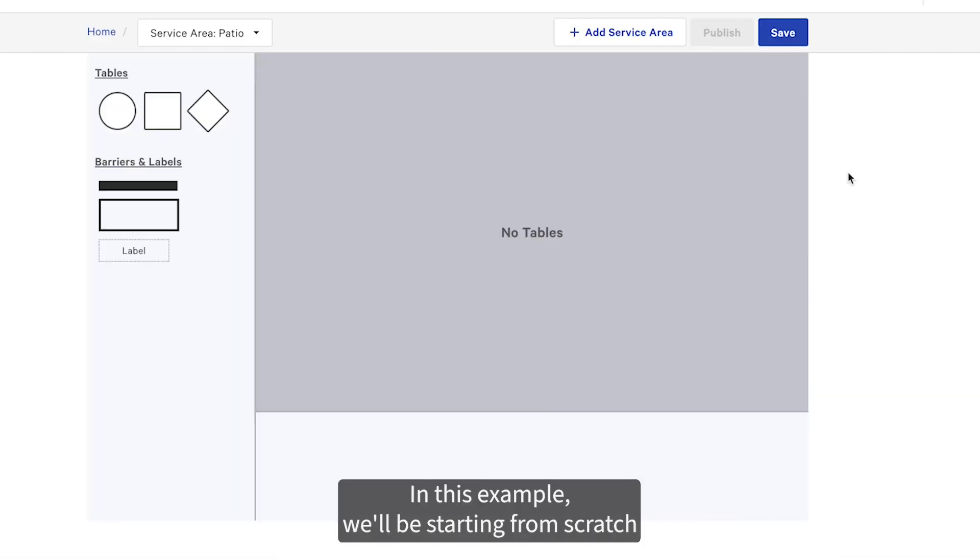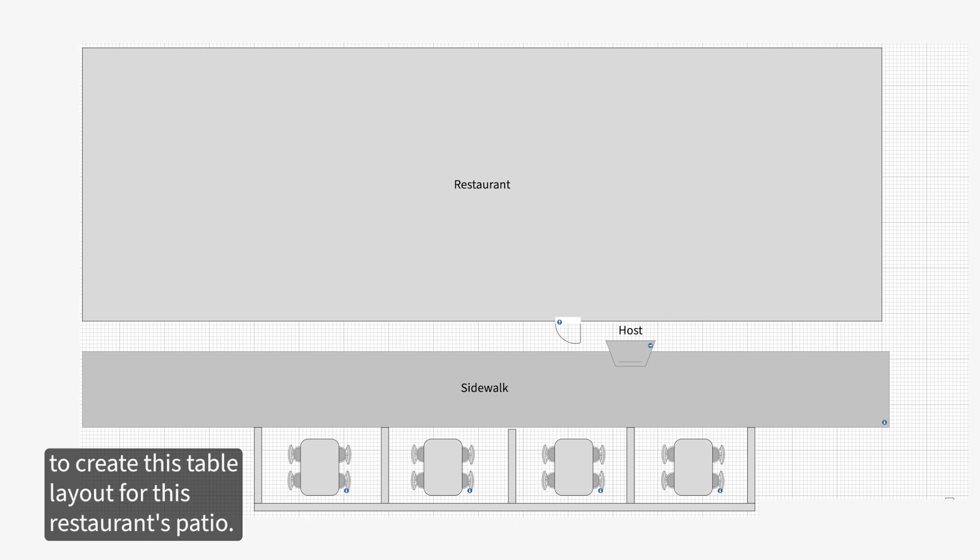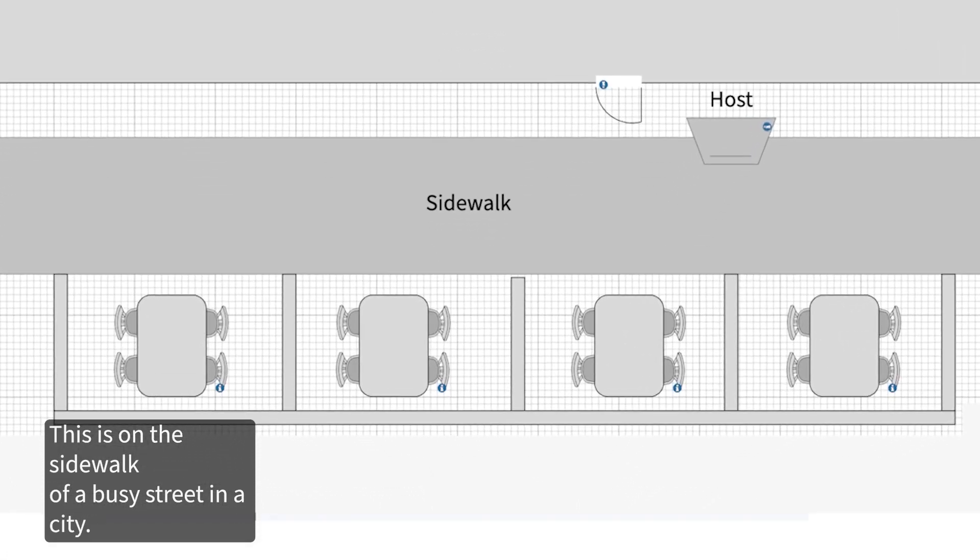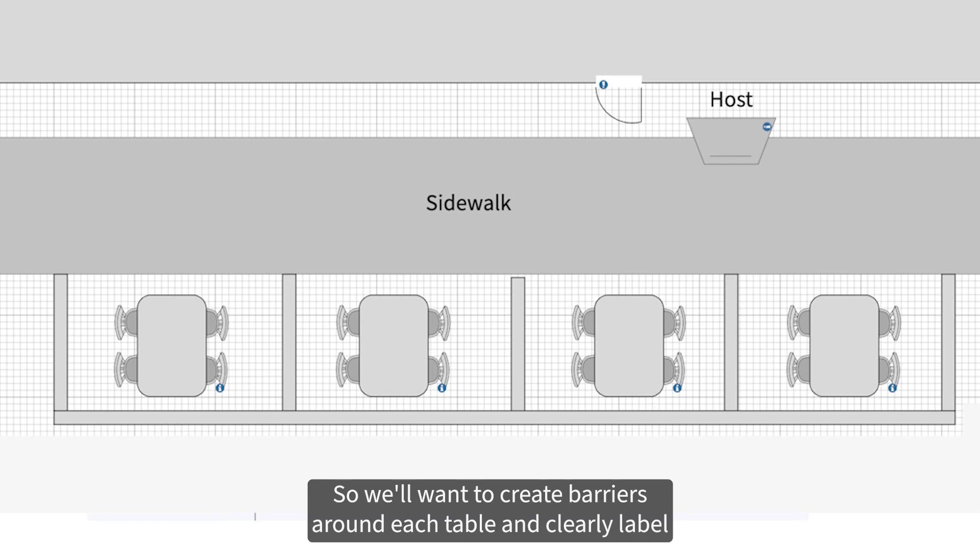In this example, we'll be starting from scratch to create this table layout for this restaurant's patio. Here's a bird's eye view of the restaurant's patio. This is on the sidewalk of a busy street in a city, so we'll want to create barriers around each table and clearly label where the host stand is in relation to the tables.